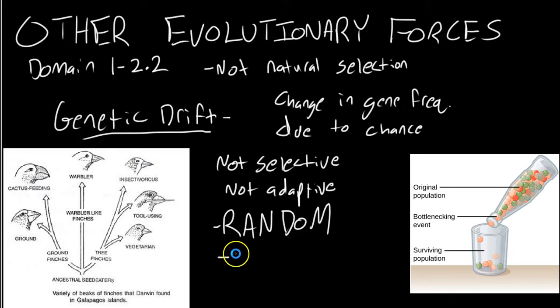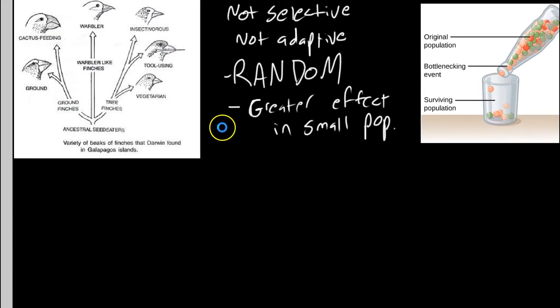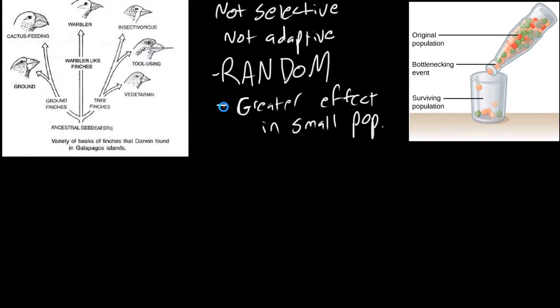Something you need to know about genetic drift before we talk about the types of genetic drift is that it has a greater effect in small populations. So in smaller populations, genetic drift is a much more dramatic force. On the screen right now is two forms of genetic drift.